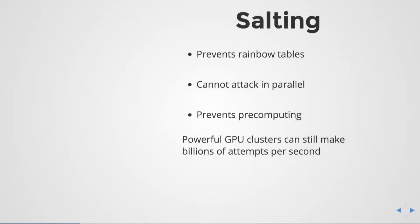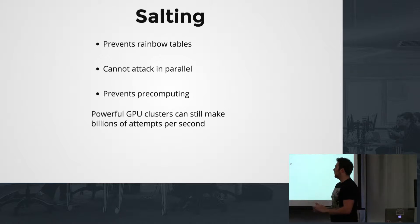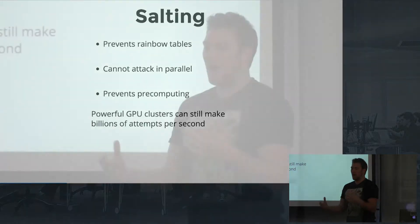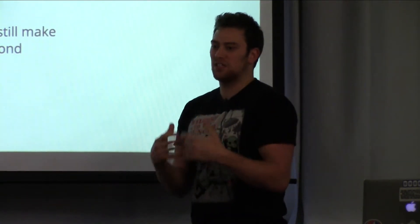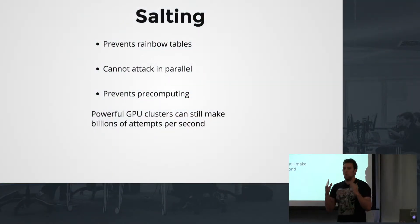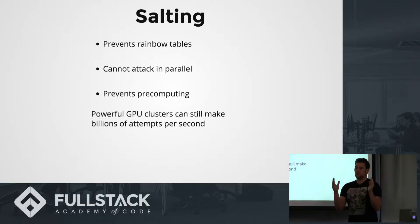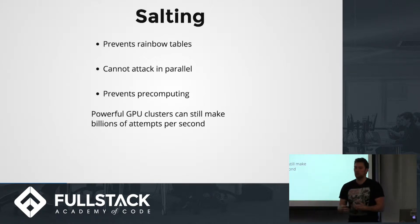Salting prevents rainbow tables, which we'll get to in a moment. You also can't attack in parallel. Rainbow tables work by pre-computing a whole chain of possible values, making it more efficient to access data quickly once obtained. With salting — especially unique salting where you generate a unique salt — you can only attack one password at a time. So the time that used to apply to the whole dataset now applies to just a single password, which really limits the attacker.